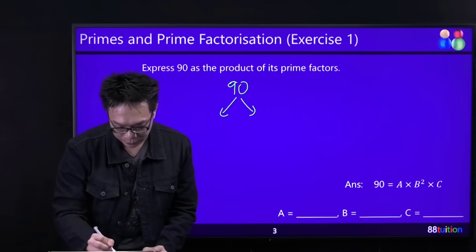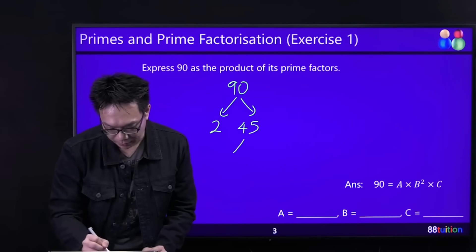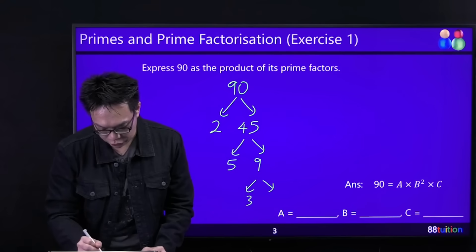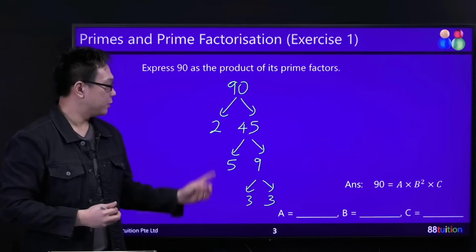So 90 is what? 2 times 45. 45 can be made up of what? 5 times 9, right? 9 can be made up of what? 3 times 3. Can you see now?